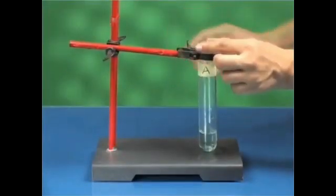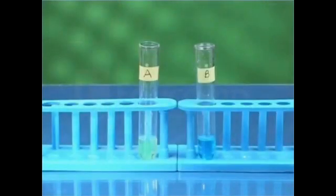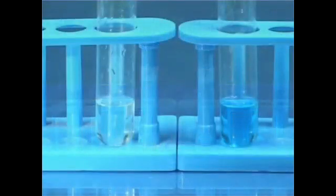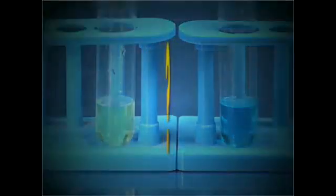Now take out test tube A from the clamp stand and keep it beside test tube B for comparison. On comparing both the solutions, you will observe that the original deep blue color of copper sulphate solution has changed to light green.